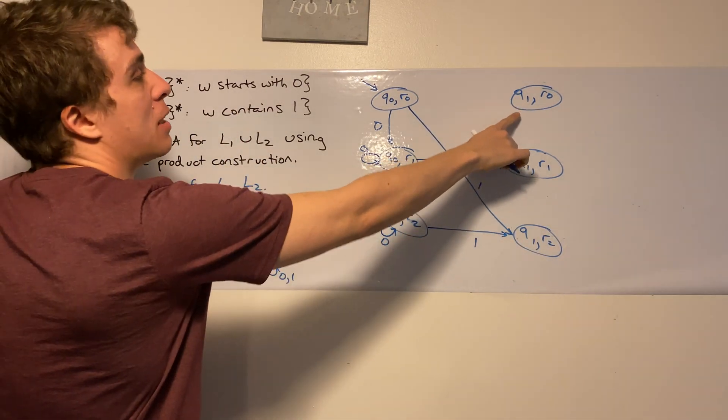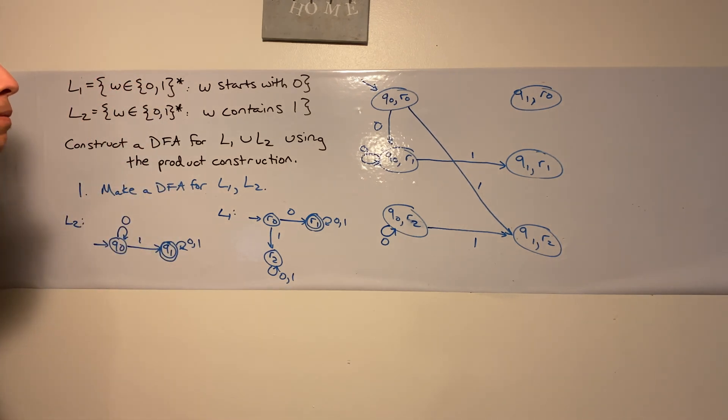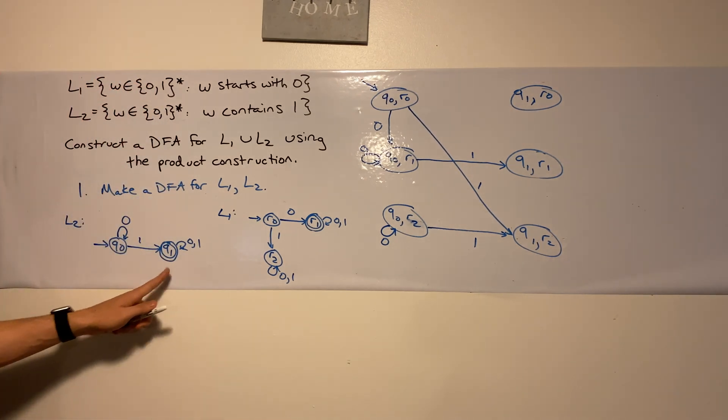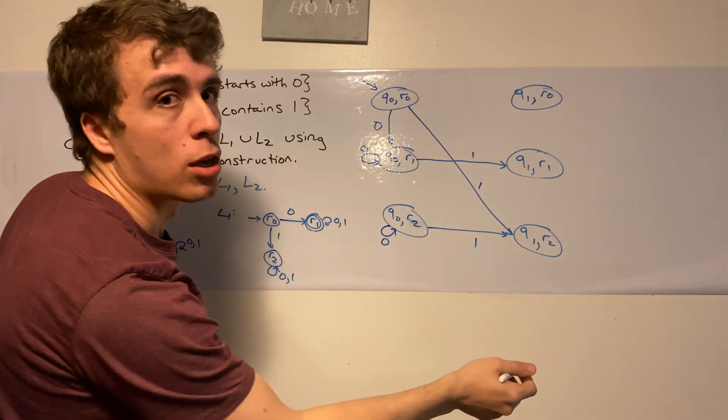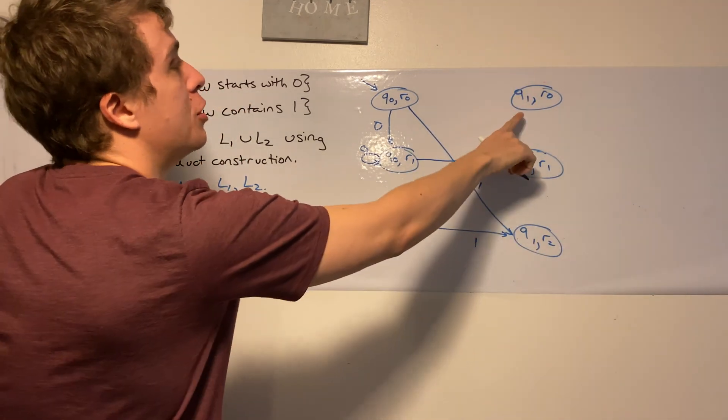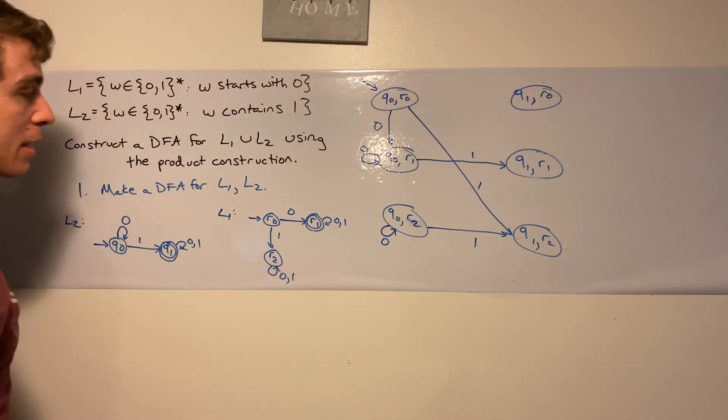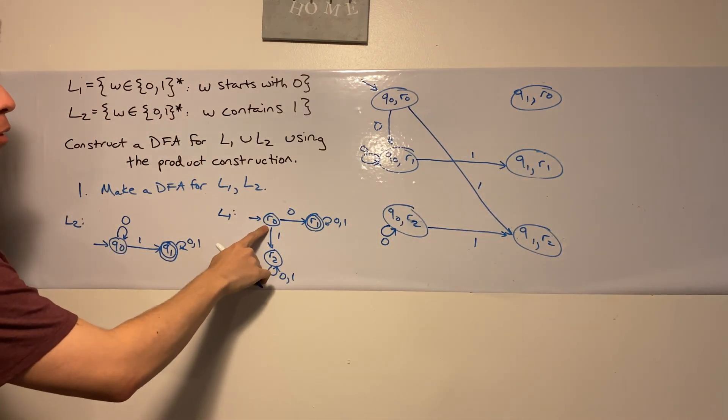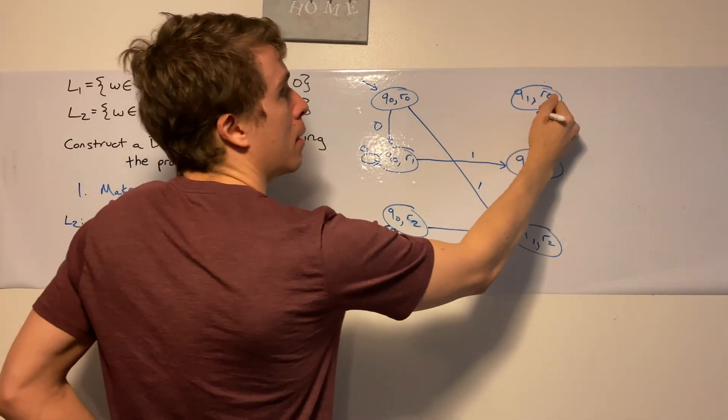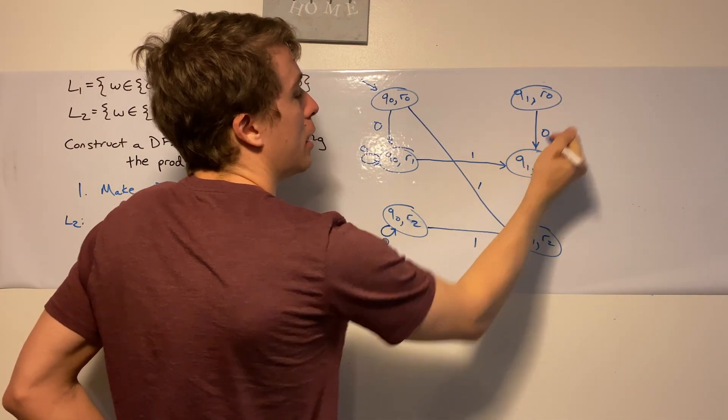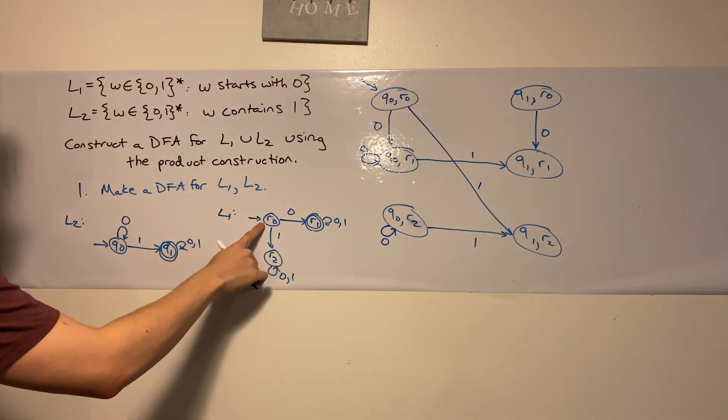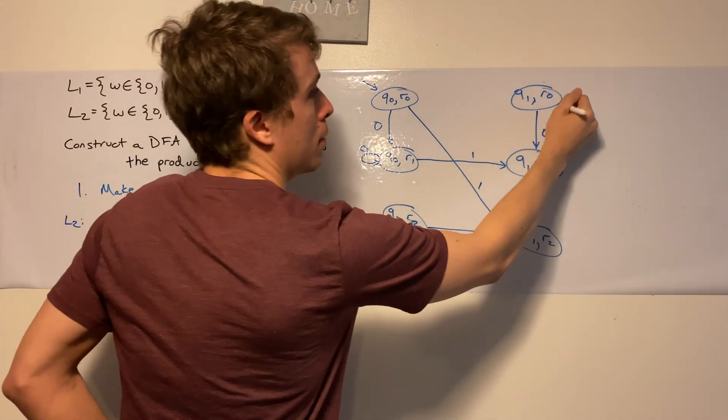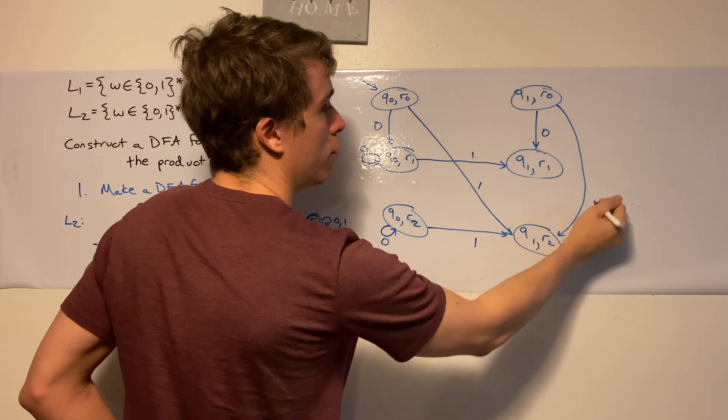So let's look at this state now. q1, r0. q1 self-loops on everything. So no matter what, if I'm in the q1 column, I'm going to stay there. So q1, I'm staying in the q1 column. r0 on 0 goes to r1. So I'm going to go here on 0. Where do I go on 1? I go to r2 from that same state.